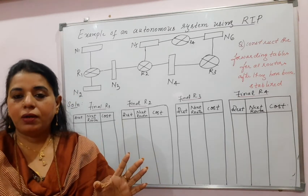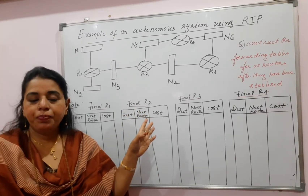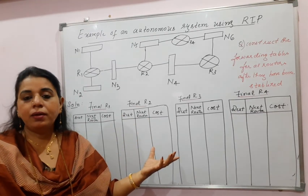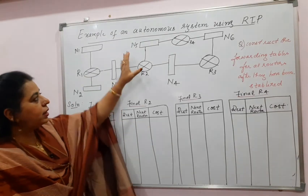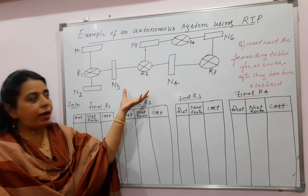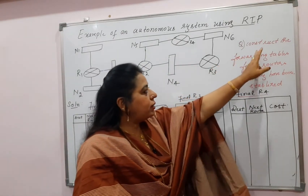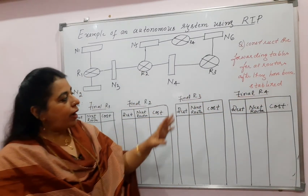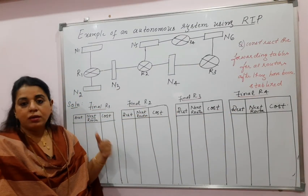The forwarding table consists of three columns because the next-hop router information is included in it. Now let us take one example. The difference between the previous example and this example: in a question paper, a network scenario can be given consisting of many routers and networks, and the question can be 'construct the forwarding tables for all routers after they have been stabilized.' Once we use the word 'stabilized,' that means you are going to write the final forwarding tables.